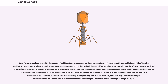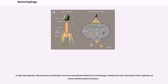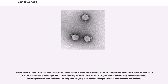In 1969, Max Delbrück, Alfred Hershey, and Salvador Luria were awarded the Nobel Prize in Physiology or Medicine for their discoveries of the replication of viruses and their genetic structure. Phages were discovered to be anti-bacterial agents and were used in the former Soviet Republic of Georgia, pioneered there by Giorgi Eliava with help from the co-discoverer of bacteriophages, Félix d'Hérelle, during the 1920s and 1930s for treating bacterial infections. They had widespread use, including treatment of soldiers in the Red Army, but were abandoned for general use in the West for several reasons.